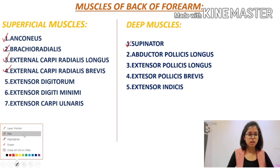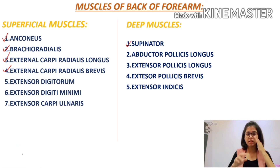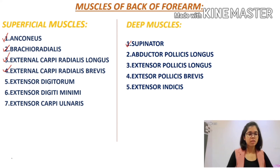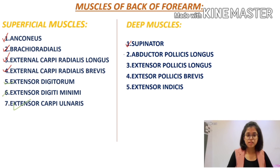As we know, the nerve divides into the deep division and the superficial division. The deep division will now supply the rest of the muscles: extensor digitorum, extensor digiti minimi, and extensor carpi ulnaris; next, abductor pollicis longus, extensor pollicis longus, extensor pollicis brevis, and extensor indicis.